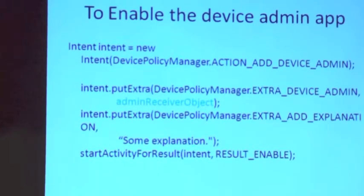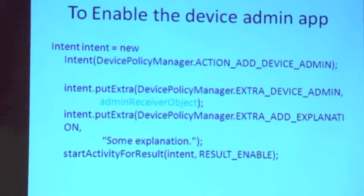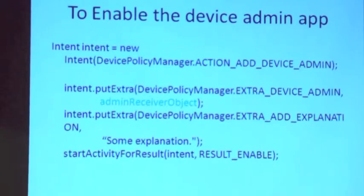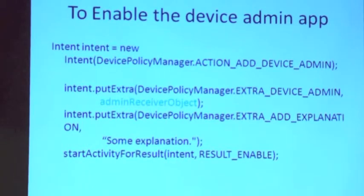The code to enable the device admin app on your device is simple. You declare an intent with ACTION_ADD_DEVICE_ADMIN. This action adds the device admin to your application. You can add extra information and pass the admin receiver object — which is the object of the broadcast receiver you declared. In that receiver, you have declared all the policies with the help of the DeviceAdminInfo object. These three APIs are interconnected.